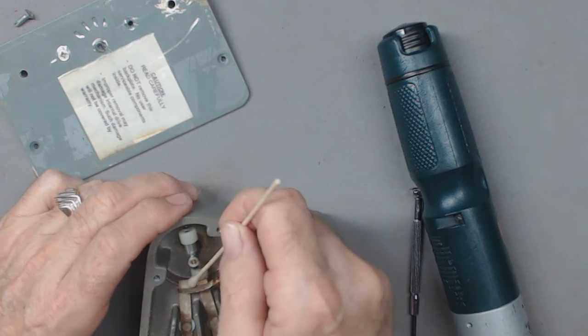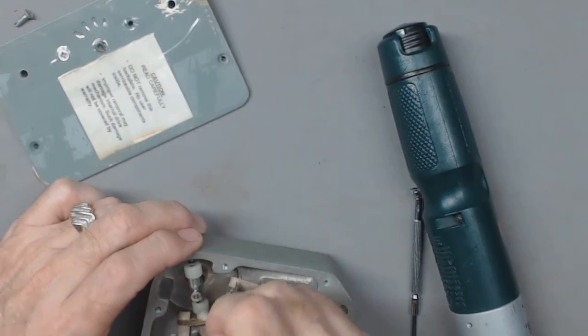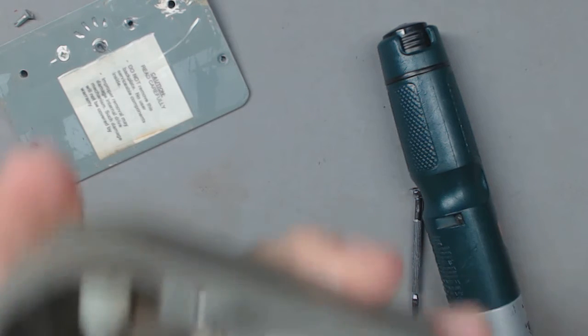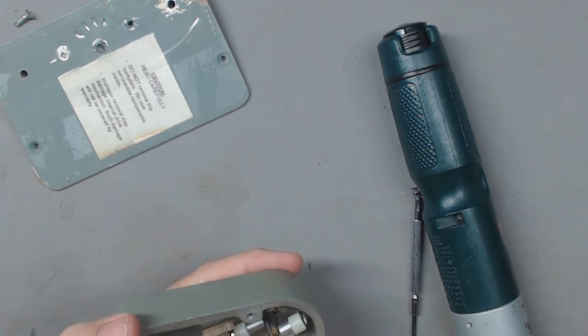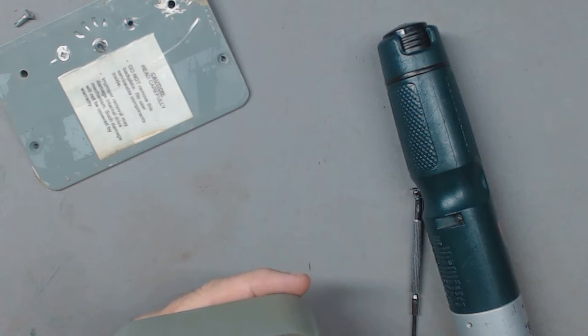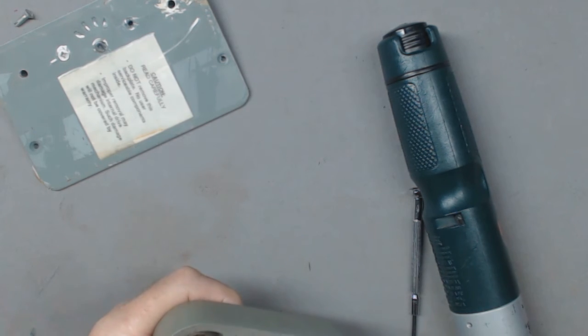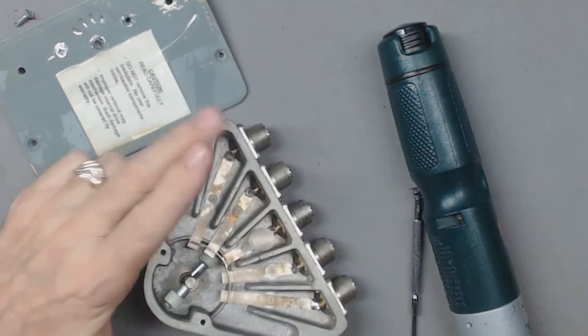I will spray some of that cleaner on this Q-tip and just swab out those little strips, being very careful here. These do look a little oxidized - see the discoloration. Like I say, I don't want to use any abrasives on this. Let me move the switch here. Can't really get underneath there. Let me use a brush so I can get that contact cleaner down underneath those little strips.